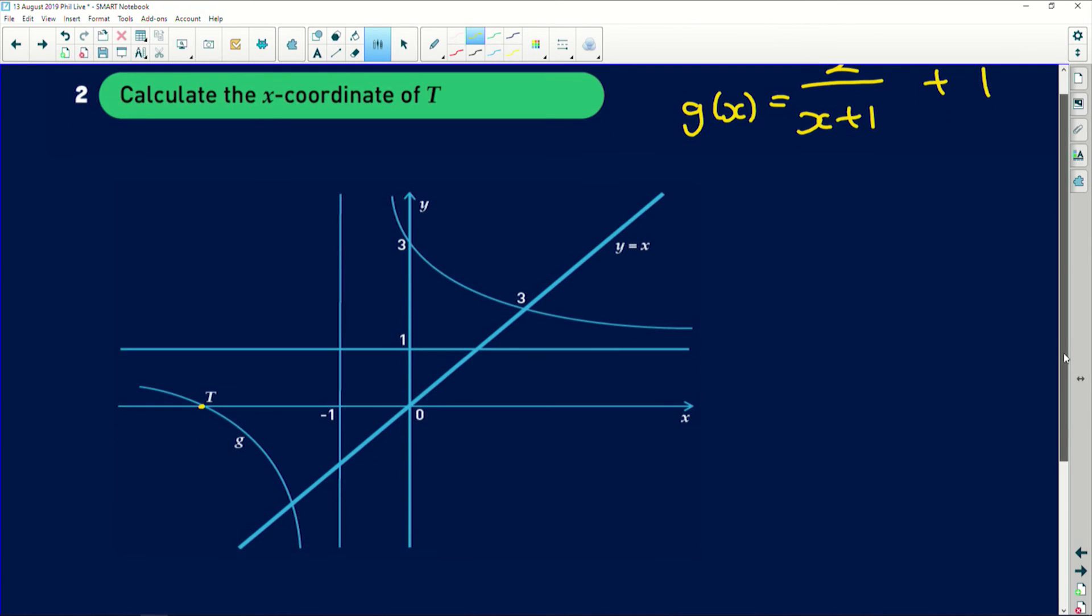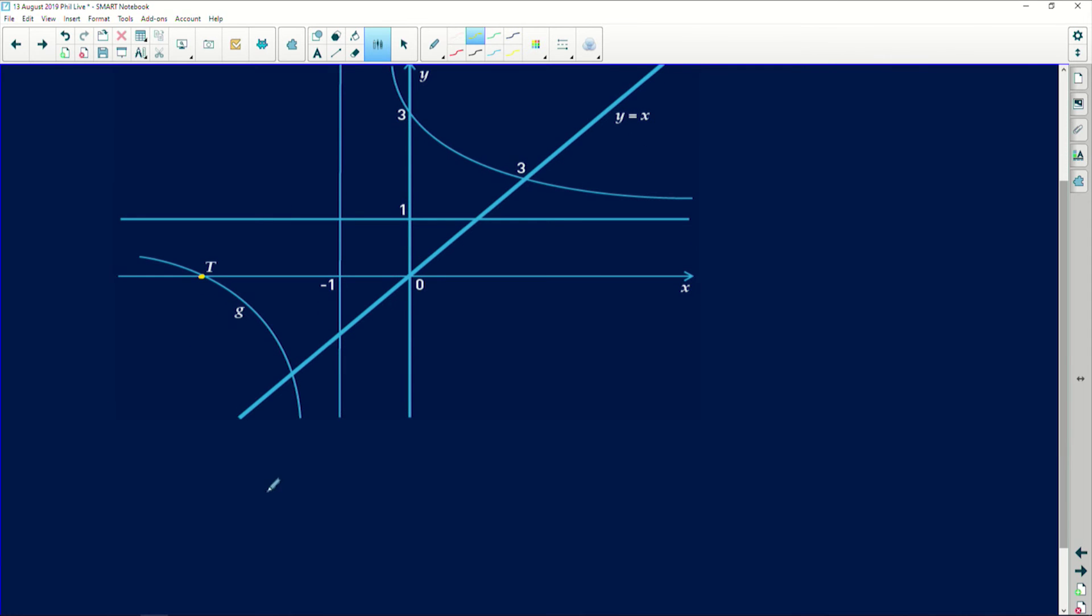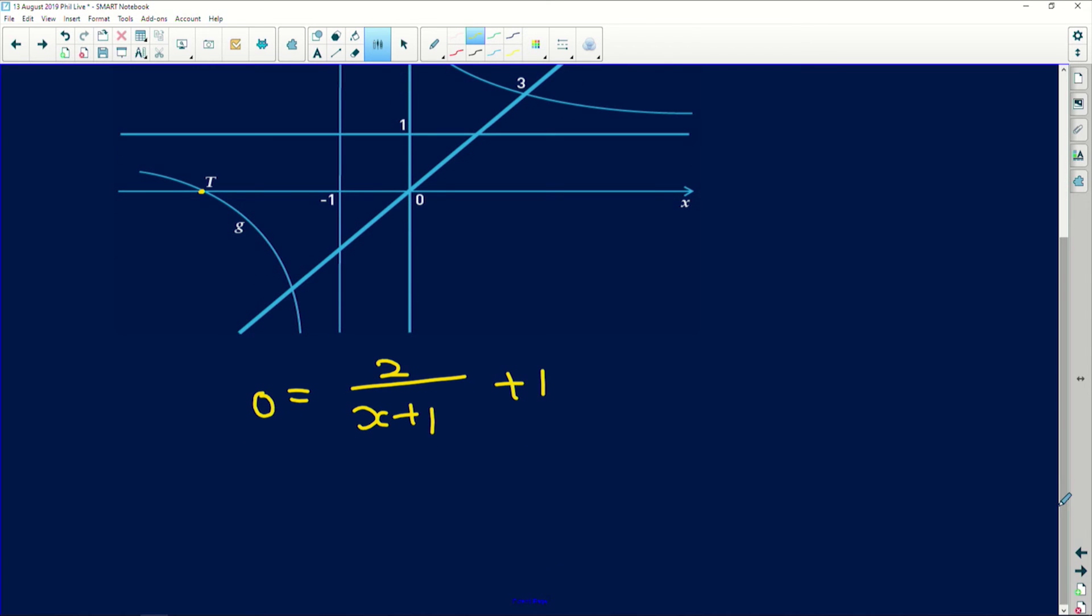So 0 equals 2 divided by x plus 1 plus 1. Now all we have to do is solve for x, so we subtract 1 from both sides.